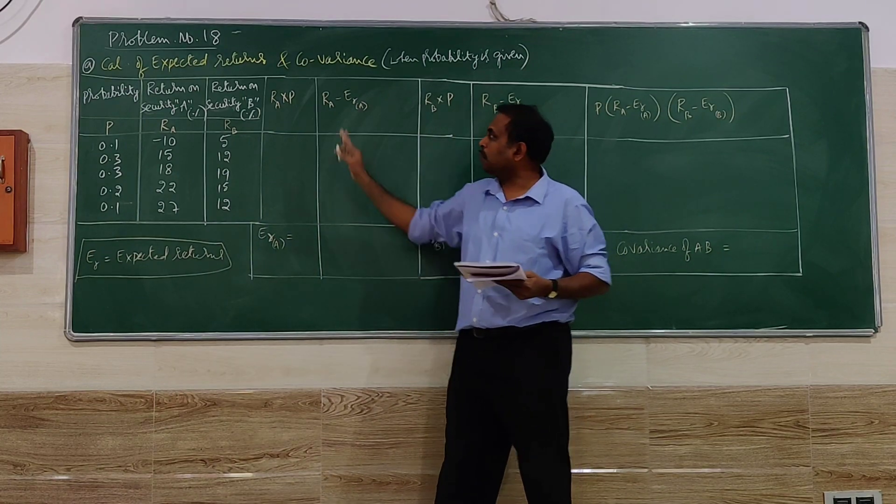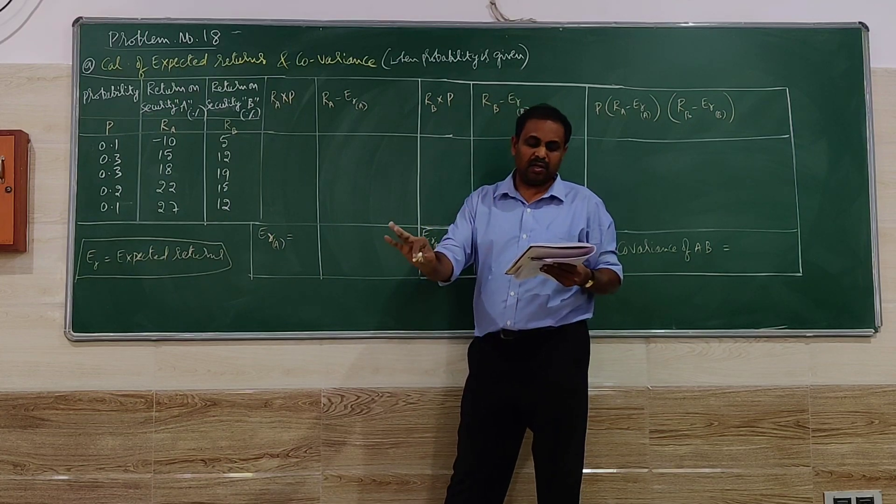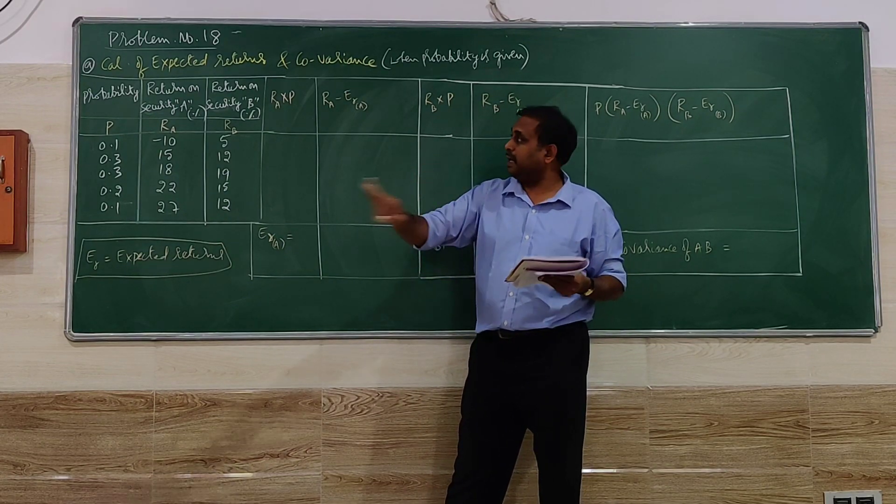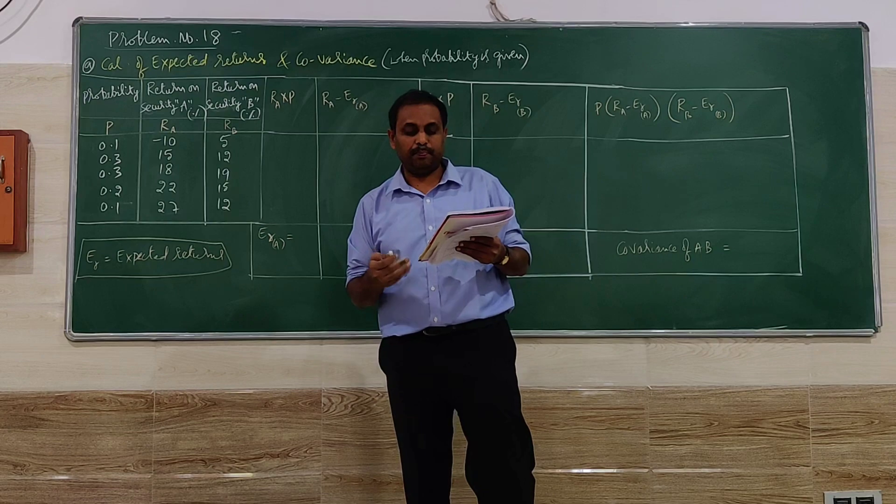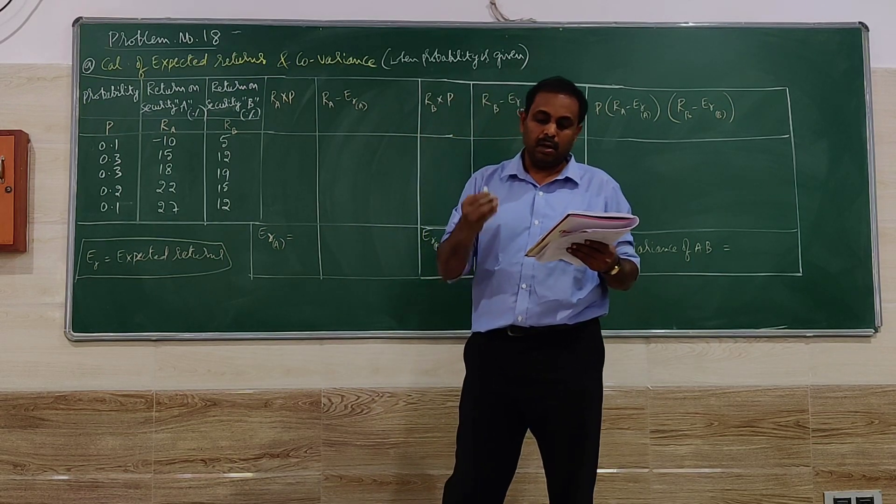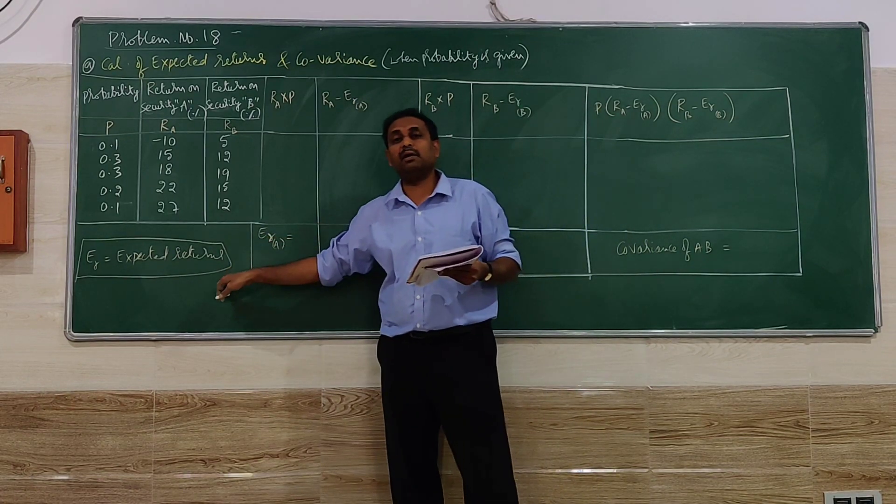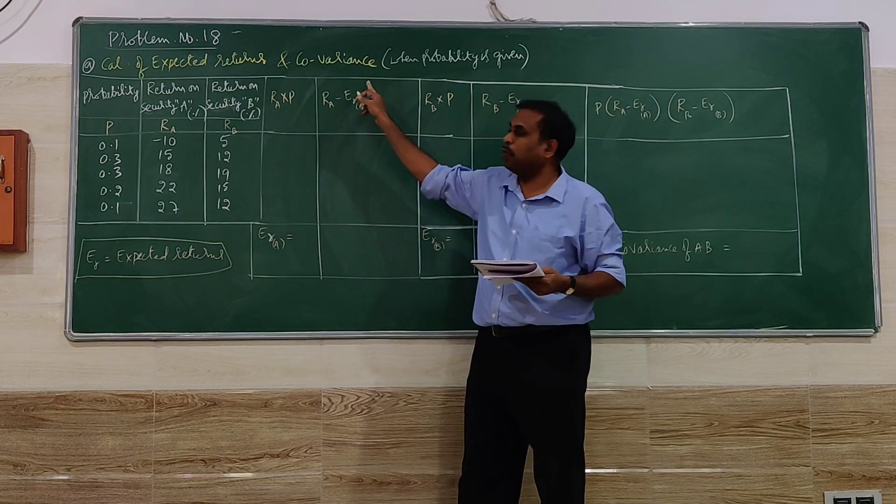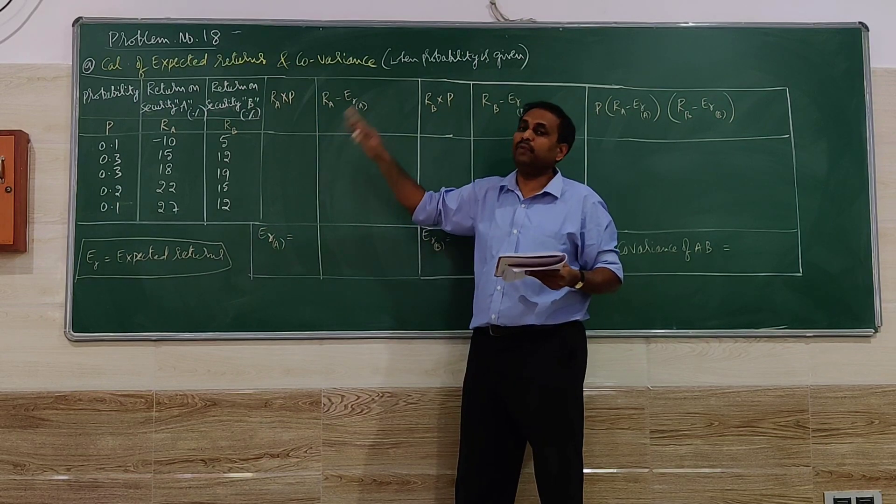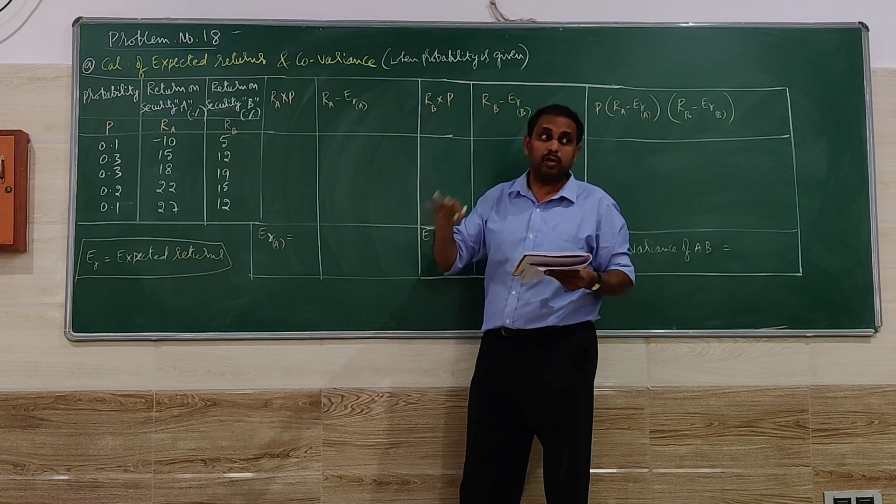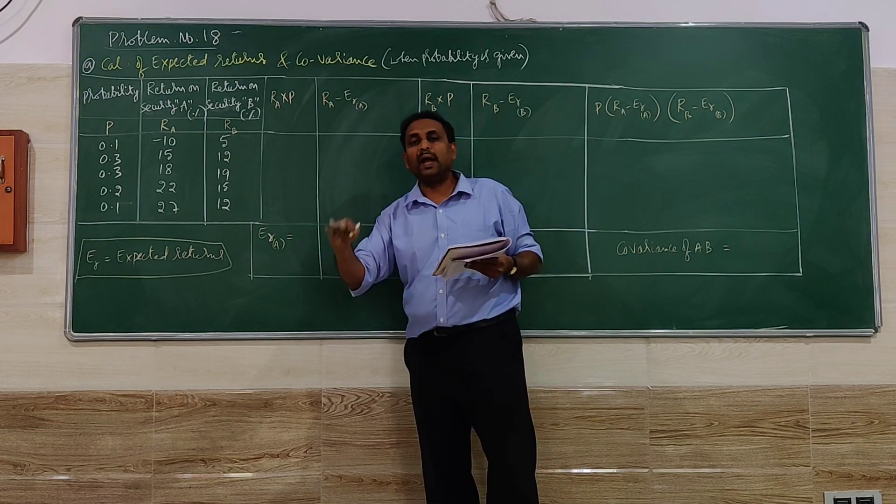Once you ensure that, you have to go for calculation of expected return. In the problem it is not given at all to find what, that is, expected return. So if you look at the last part of the question, it is there: compute the covariance between the returns on security A and security B. So that is the indication that expected return has to be calculated. To calculate covariance, expected return is compulsory. Without doing that, we cannot calculate the covariance.